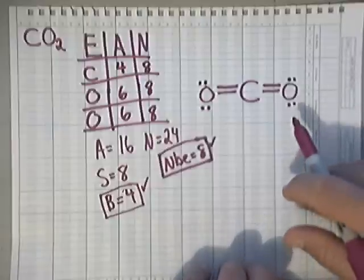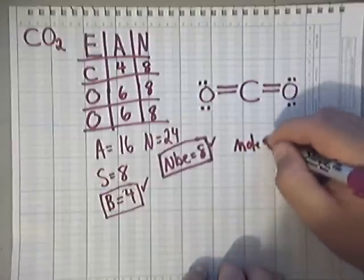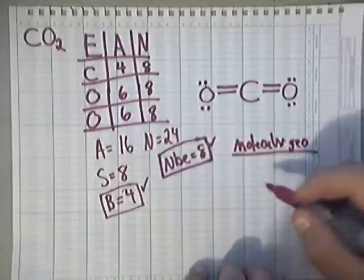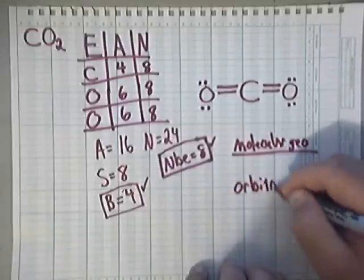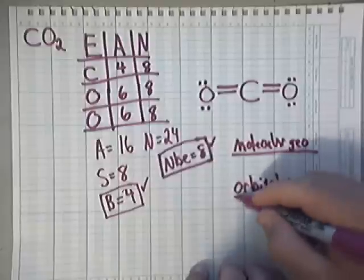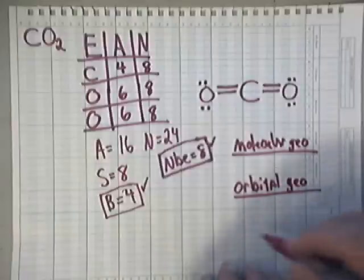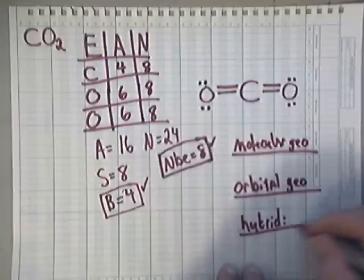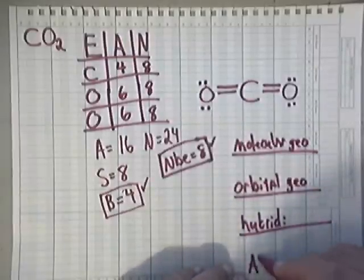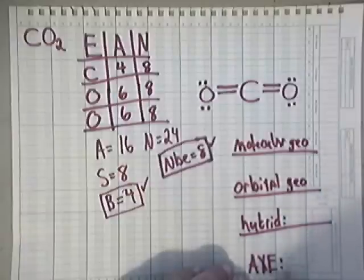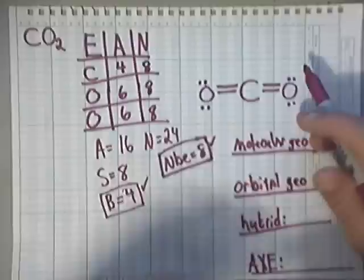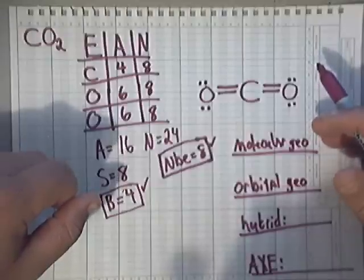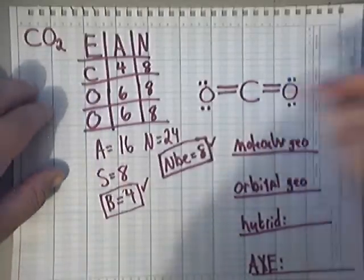Now, the only thing that we need to do now is figure out the molecular geometry, orbital geometry, hybridization, X notation, and polarity.